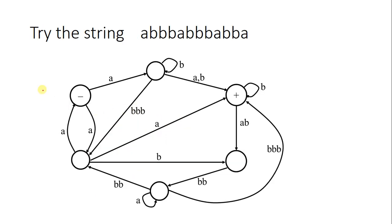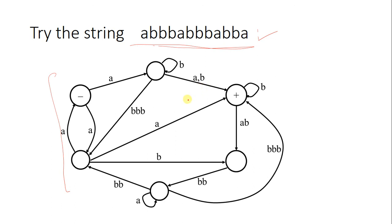Here is a challenge: you have a transition graph and a string to pass through it. Be very careful choosing the path because it is non-deterministic and can accept more than one letter at a time. There is definitely a path available for this string that will make it acceptable, but you have to find that path. Accept this challenge and stay tuned for the next lectures.